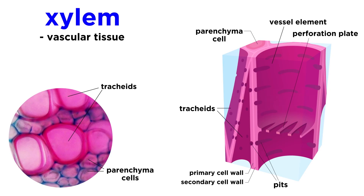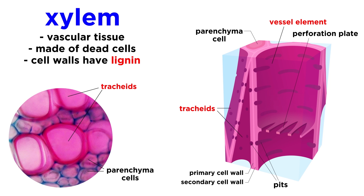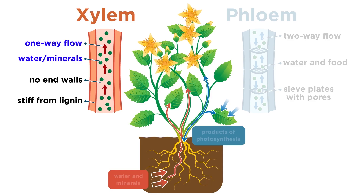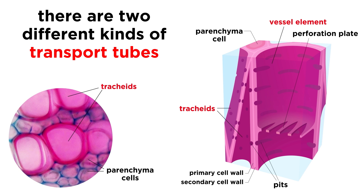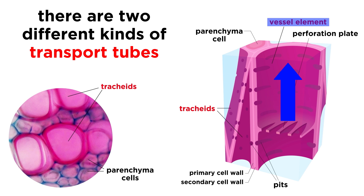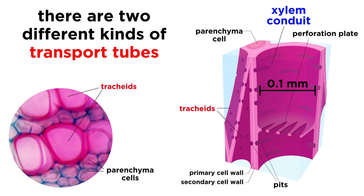Xylem is a vascular tissue made of dead cells called tracheids and vessel elements. These are both elongated cells whose walls are strengthened with lignin, the substance that makes woody plants so stiff and strong. Xylem is the vascular tissue responsible for transporting water and mineral nutrients upwards. The roots of a plant absorb water and minerals from the soil; this water is brought to the center of the root, where it encounters the xylem. Within the xylem there are two kinds of transport tubes, composed of the tracheids and vessel elements. Tracheids are smaller and tapered at each end, while the vessels consist of cells lined up to create open tubes, also called xylem conduits, which are around the width of a human hair and can be extremely long.